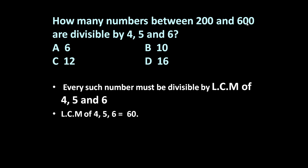If we see the range 200 to 600, the numbers which are multiples of 60 are 240, 300, 360, 420, 480, and 540. After that, 600 is there. So in between 200 and 600, six such numbers are there.